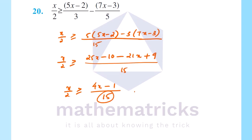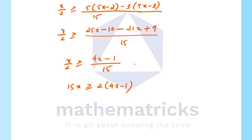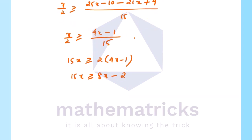Cross multiplying: 15x on the left, moving 8x to the left side gives 15x minus 8x, which is 7x. So 7x greater than or equal to minus 2. Therefore x is greater than or equal to minus 2 by 7.